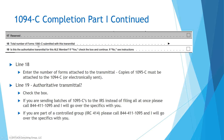Line 20 of the 1094-C will match what you entered on line 18 — the number of 1095-C forms submitted to the IRS. If you're filing on paper, you must send the 1094-C along with all copies of the 1095-C. The distribution date to your employees is March 2nd. The paper filing deadline to the IRS is February 28th, which is before the employee deadline. I've had clients who sent in the 1094 without the employee copies, and the IRS contacted them asking where the copies were.